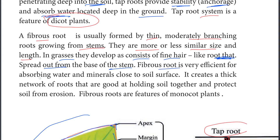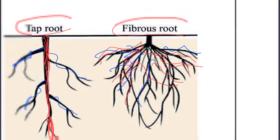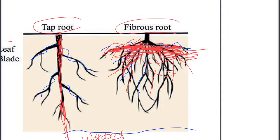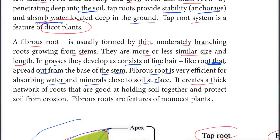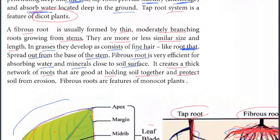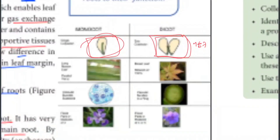The fibrous root is very efficient for absorbing water and minerals close to the soil surface. It creates a network of roots that are good at holding soil together and protect soil from erosion. Fibrous roots are a feature of monocot plants.